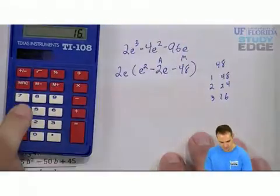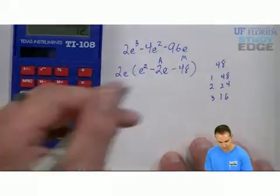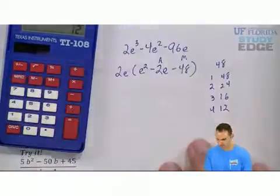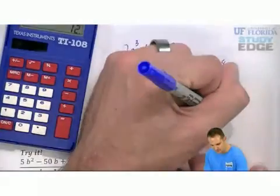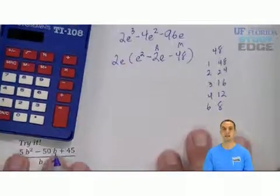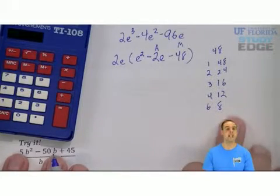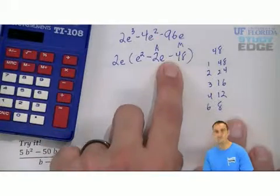3 and 16. 48 divided by 4, 4 and 12. 5 doesn't go into it. 6 times 8 is 48. And ironically, 6 times 8 is the answer.